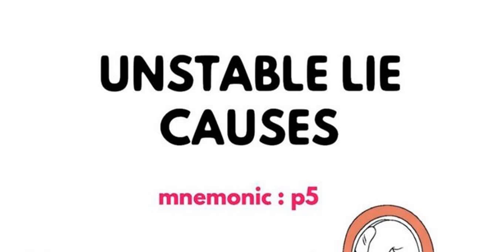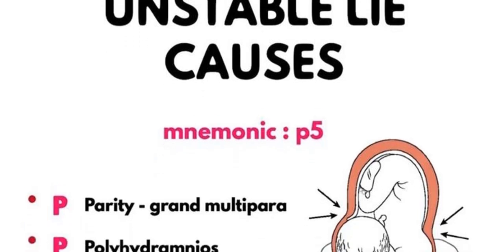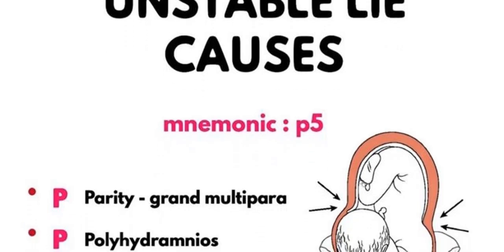The mnemonic is five Ps. The first P is parity. If the mother has a grand multipara, this is the most common cause for the unstable lie.